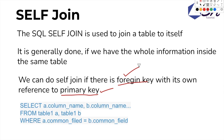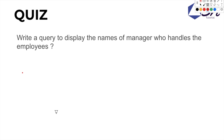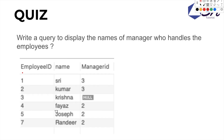The self-join syntax is here. We have column names selected with different alias names for the same table.